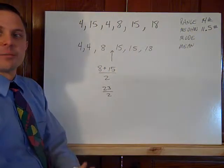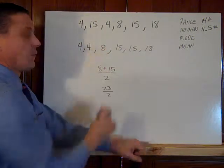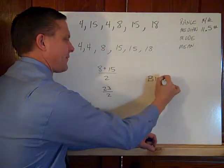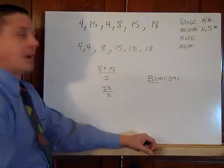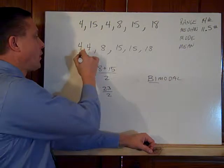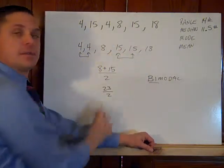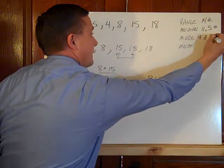The mode is the most occurring. So what number is most occurring? Well, this is a bimodal set. Bi, like your bicycle, meaning two. I think there are two modes here. Four occurs twice and 15 occurs twice. So the mode is four and 15.